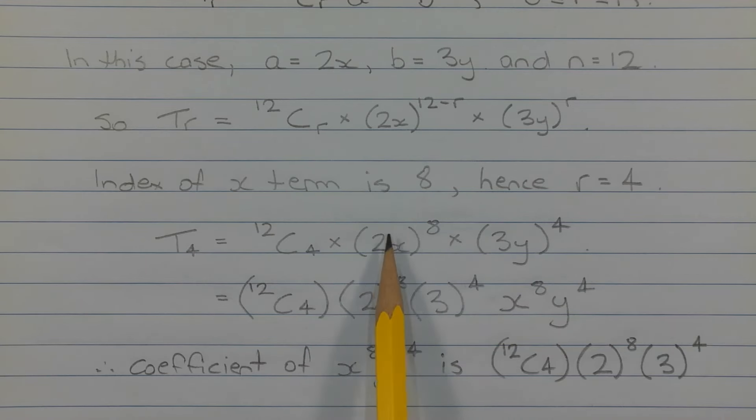Expanding the brackets, we get 12 choose 4 times 2 to the power of 8 times 3 to the power of 4 times x to the power of 8 times y to the power of 4.